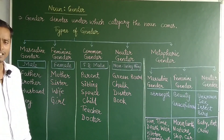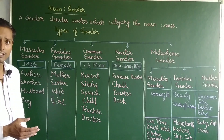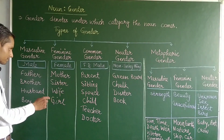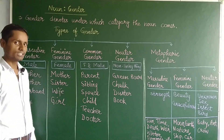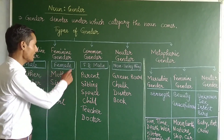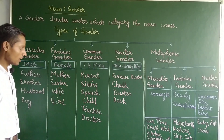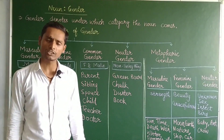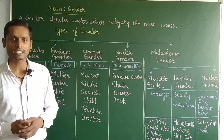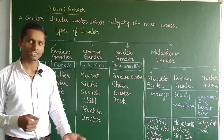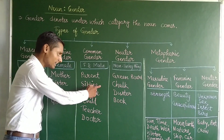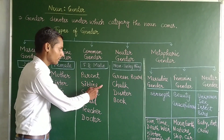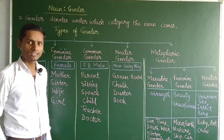When we say 'siblings,' we don't know whether the person is male or female. For example, if you say 'I have two siblings,' you cannot tell if they are brothers or sisters. So 'siblings' comes under common gender.